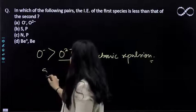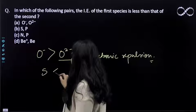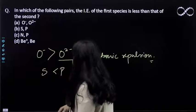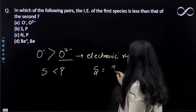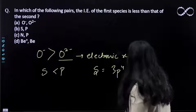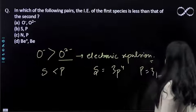If we talk about Sulphur and Phosphorus, Sulphur has lower ionization energy than Phosphorus because Sulphur's configuration is 3P⁴ and Phosphorus is 3P³.